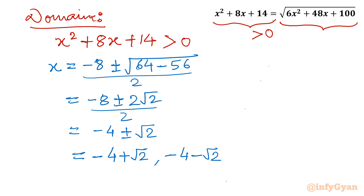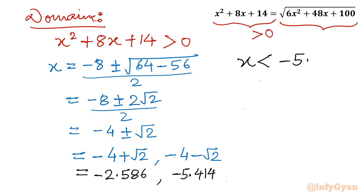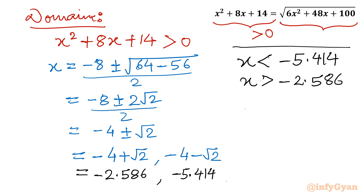The value of √2 is approximately 1.414. So −4 − √2 ≈ −5.414 and −4 + √2 ≈ −2.586. Since −5.414 is the smaller root, the domain condition for x² + 8x + 14 ≥ 0 is: x < −5.414 or x > −2.586. Values between −5.414 and −2.586 are rejected.